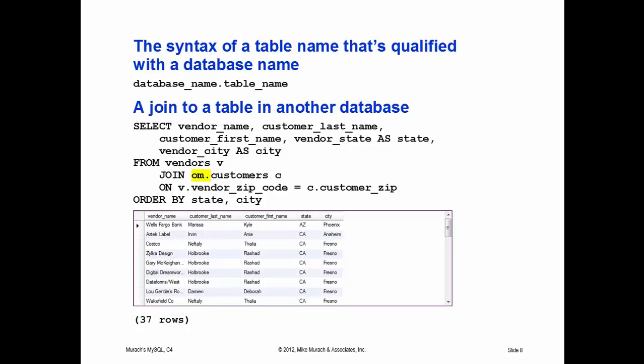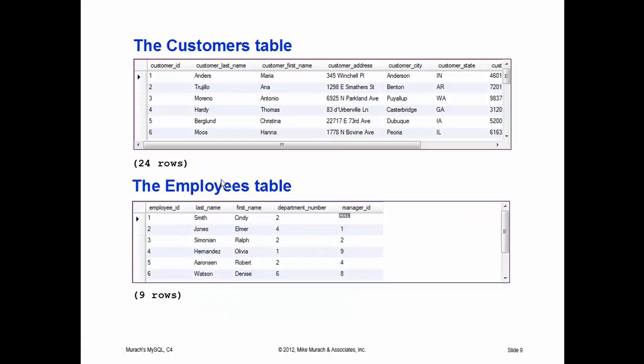Notice what they're doing here — take a look at what's in yellow on the screen. They're grabbing information from the customers table, but that customers table — which they're aliasing as C — is from another database. I believe this is the AP database we're using, but that customers table is from the OM database. We can do it because both tables have a zip code, and as long as that zip code is set up the same — same data type, ideally the same size — you'll be able to join tables from two different databases.